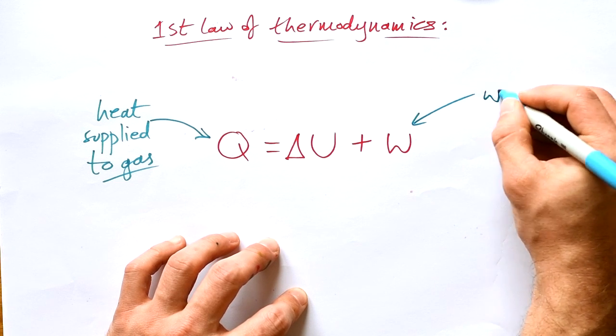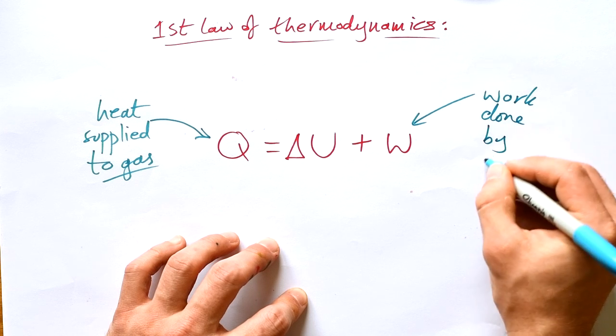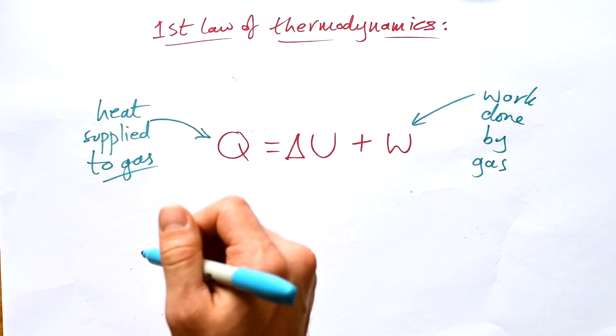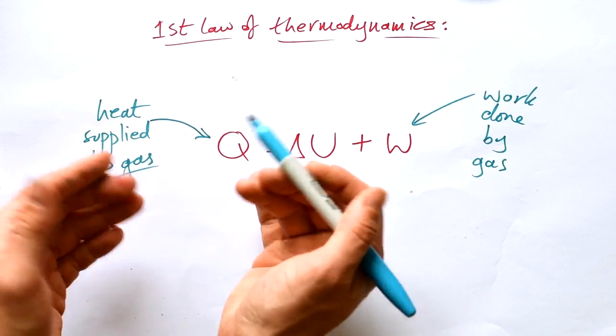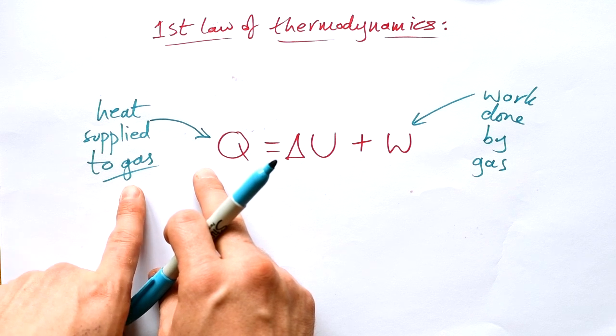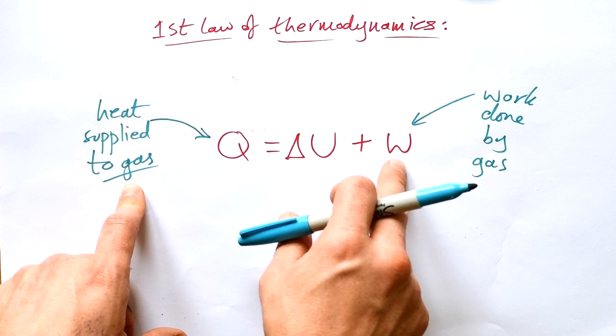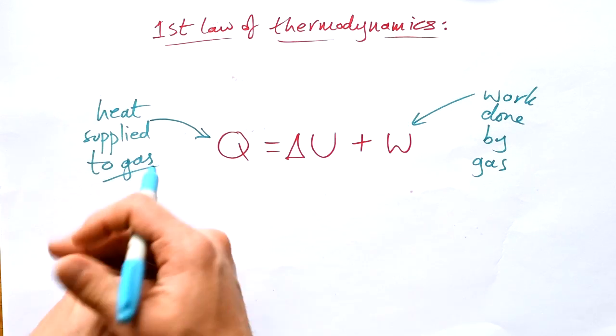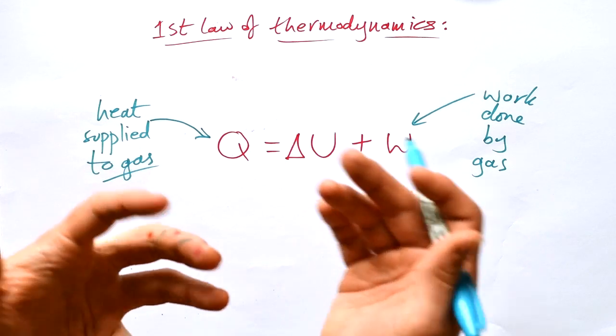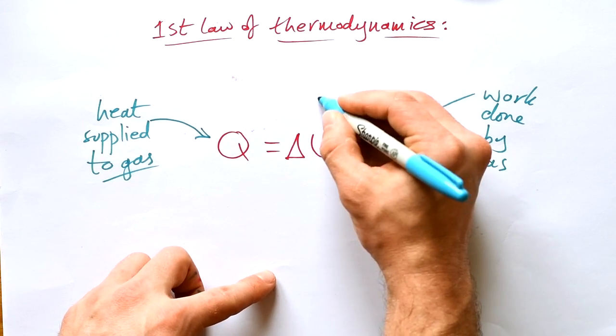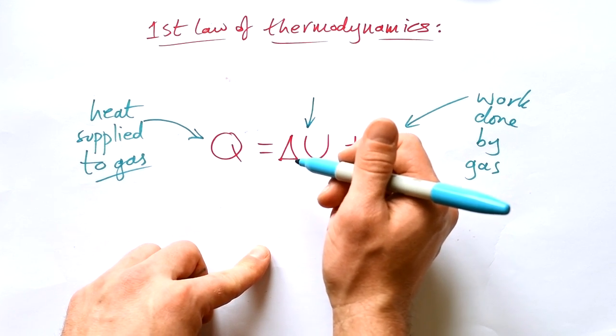This W indicates work done by gas. Now if work is done by gas then that means that it's losing some of that energy and so even though you're supplying maybe 10 joules of heat to a gas the gas might then be doing 8 joules of work and so it's not keeping all 10 joules of that heat. What's happened to the extra 2 joules left over?